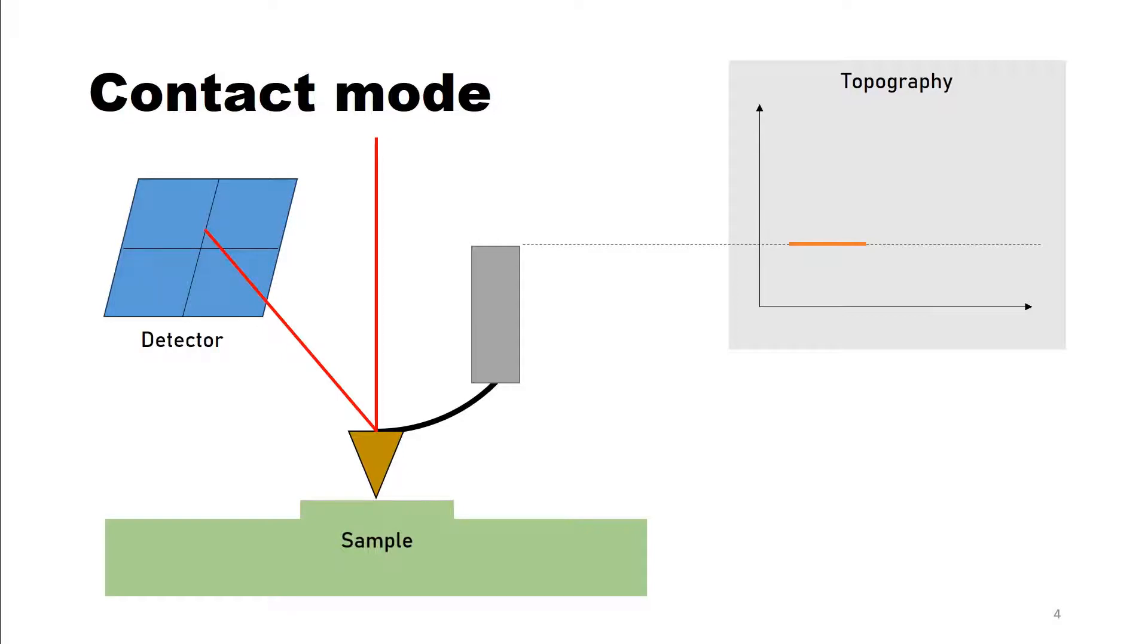Now what the detector does is it sends a signal to the z-stage which will adjust the height. A difference in topography is recorded.